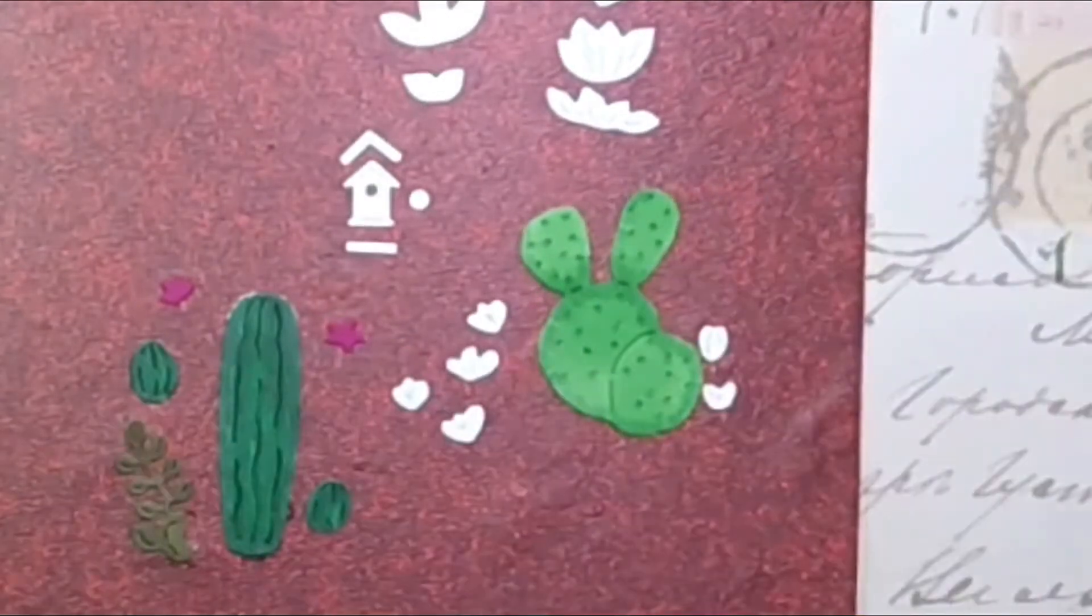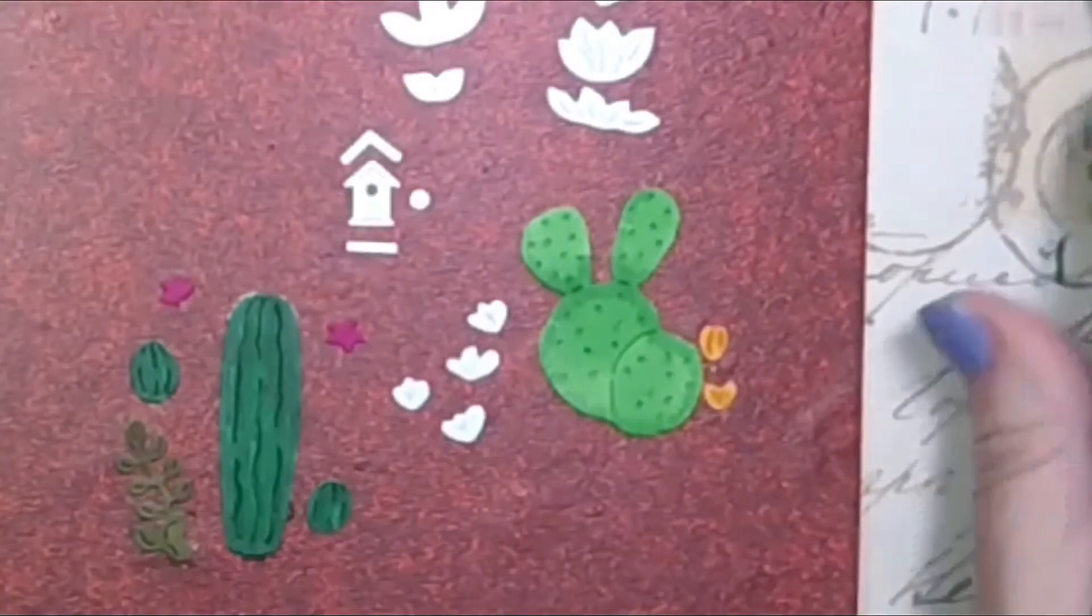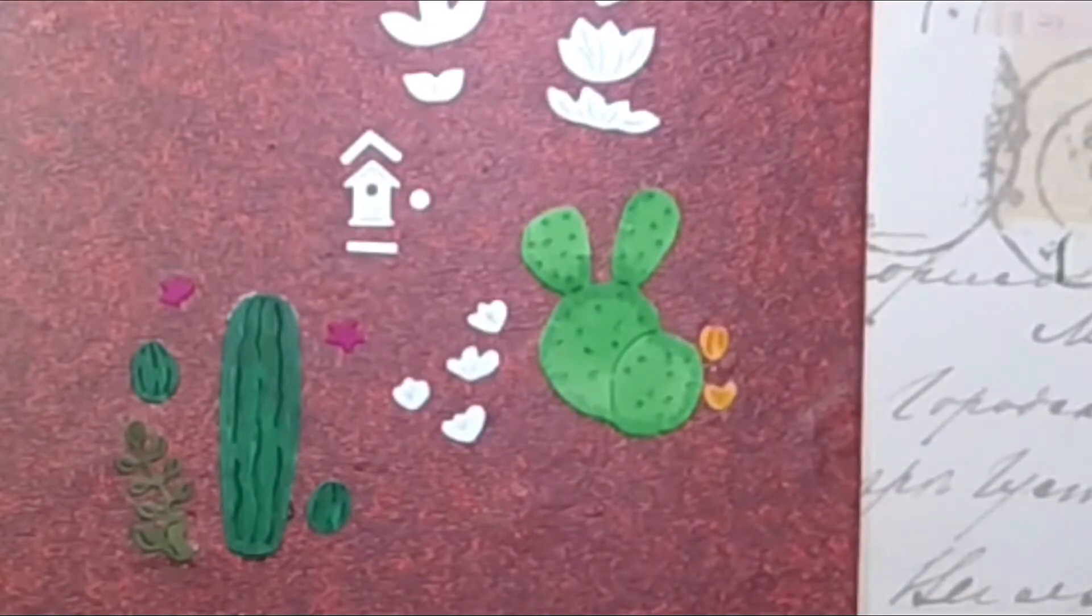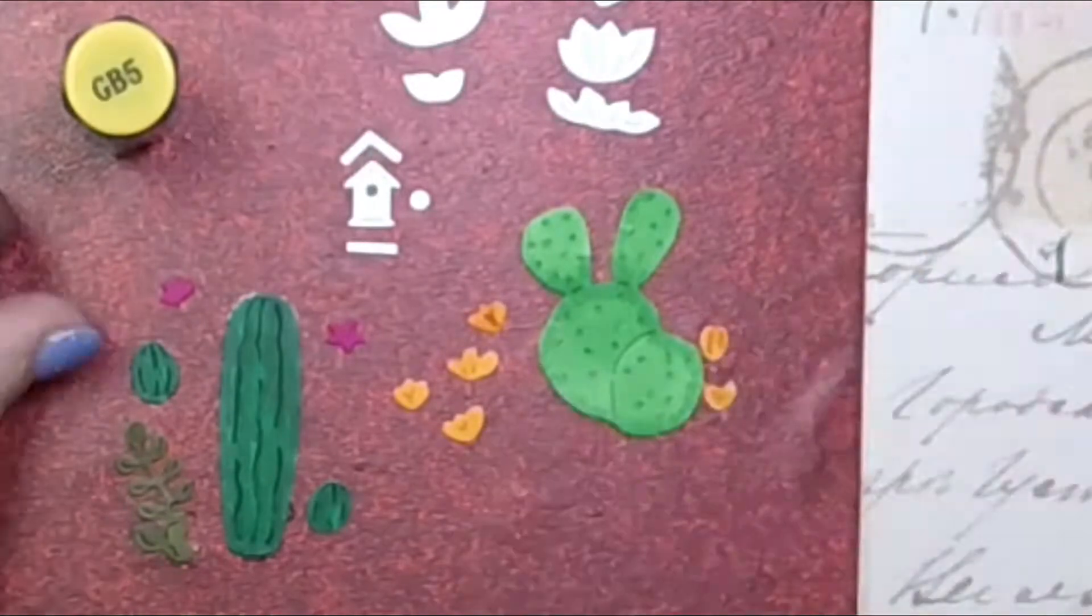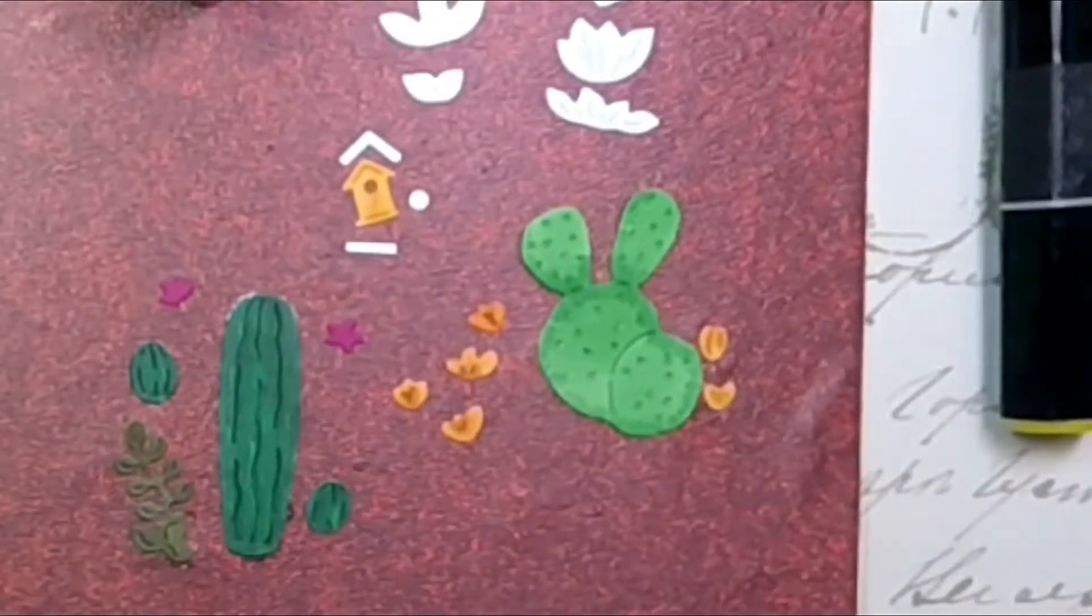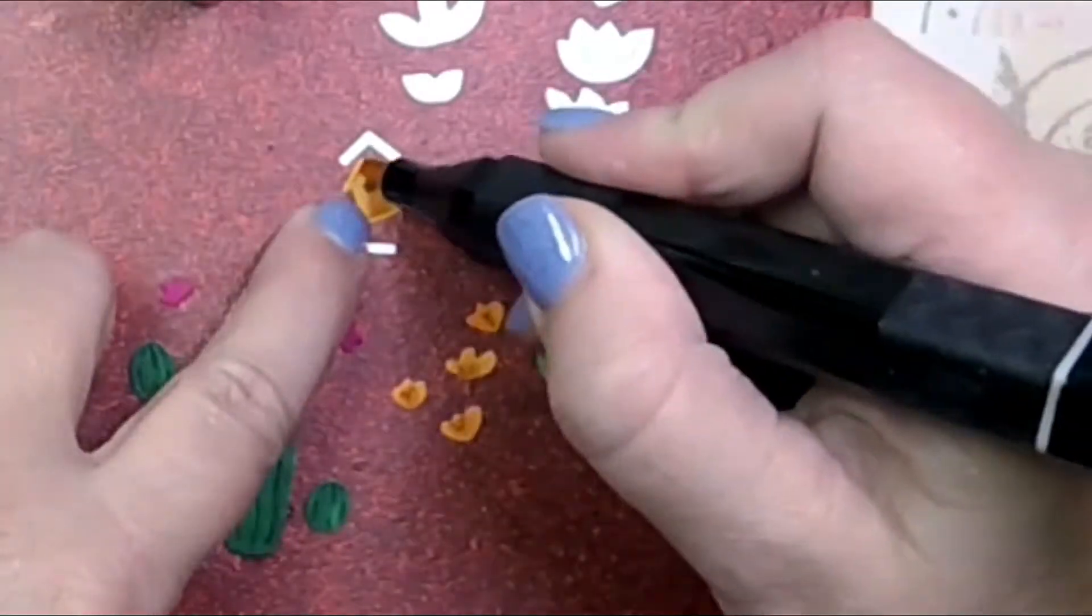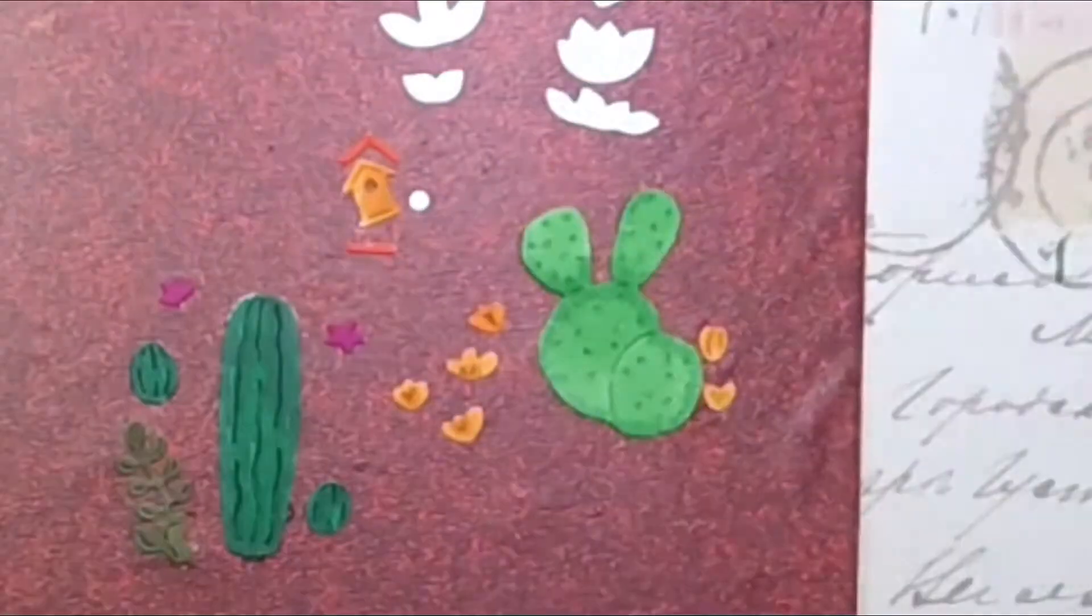And those dots that I added on that cactus, they're already imprinted into the die. I just used the darker green to go ahead and put the dots in. Now that particular cactus comes with a bunch of little flowers to go on it.